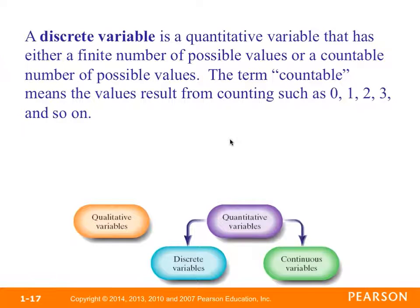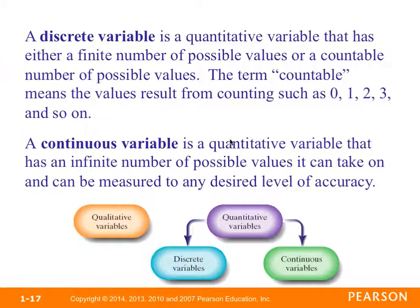Quantitative variables can be further categorized as either discrete or continuous. A discrete variable is a quantitative variable that has a finite or countable number of possible values — you can count 0, 1, 2, 3. A continuous variable has an infinite number of possible values and can be measured at any desired level of accuracy. On a number line, discrete corresponds to individual points, while continuous is shaded across the entire number line.